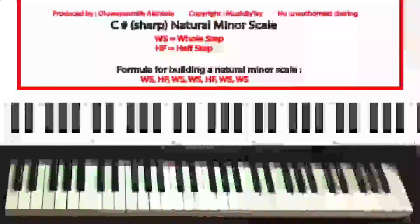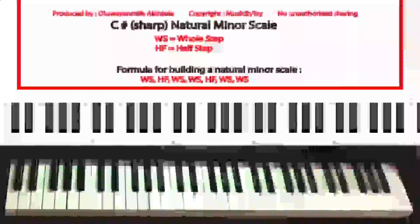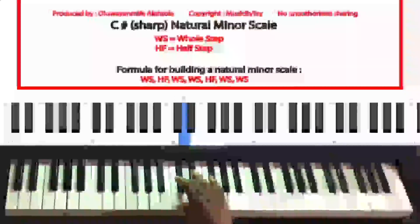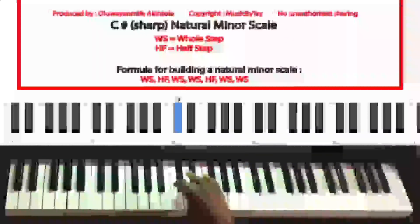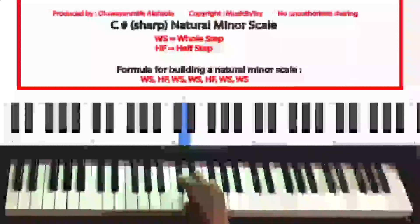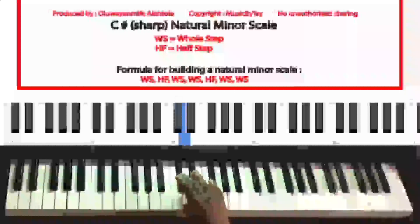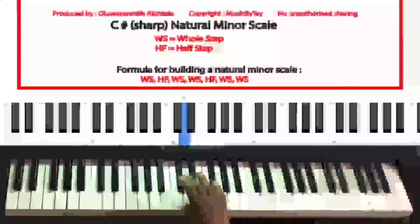The other method we could have used to figure out the C sharp natural minor scale is by using the formula. Just to remind you, whenever you move from one key to the next key without skipping any key, that means you've moved by a half step. For example, if I move from the key of C sharp to the key of D, that means I've moved by a half step. Moving from one key to the next key without skipping any key is known as moving by a half step.